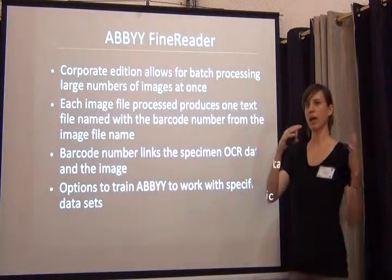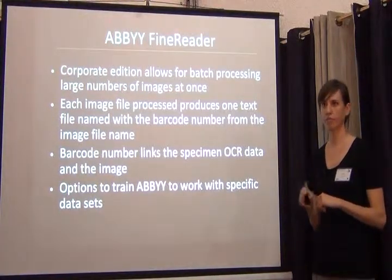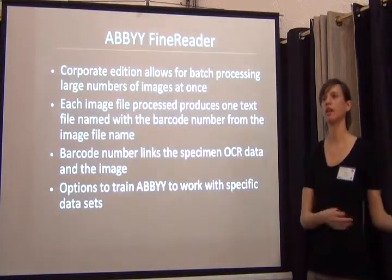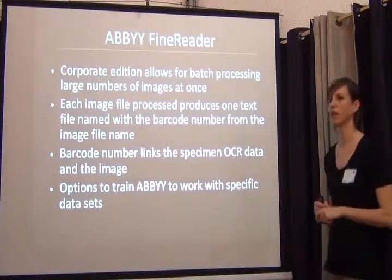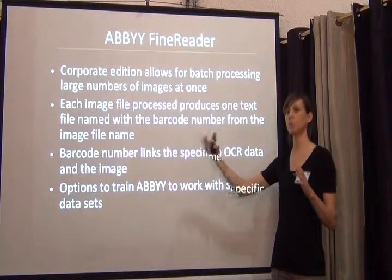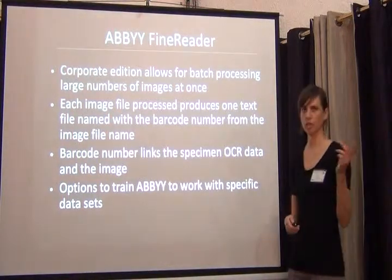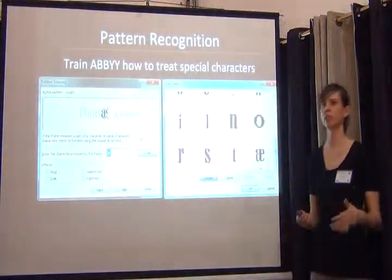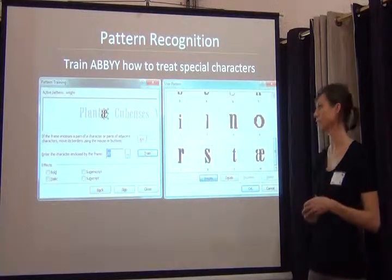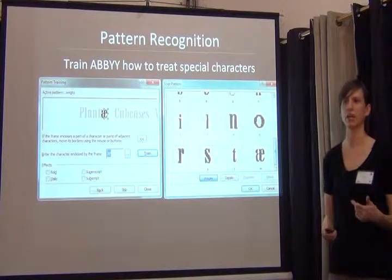Once we have our image files ready — whether the whole image or cropped to a section — we run everything through ABBYY Fine Reader. It's not free, but not terribly expensive. We use the corporate edition because it allows batch processing. We may get a thousand images ready, load them through the ABBYY software, and it'll produce a thousand text files of data for us. As it processes each file, it creates a text file named automatically with the barcode number, so we can then link the text back to the database record. You can also train ABBYY to recognize certain characters constantly in your data set — things like ligatures in certain titles — and there are many examples of how to train ABBYY to work with special characters.